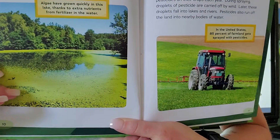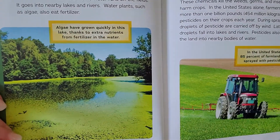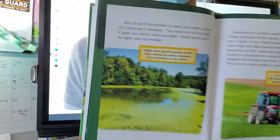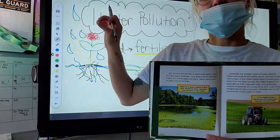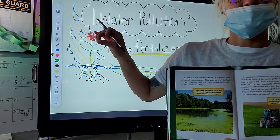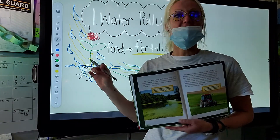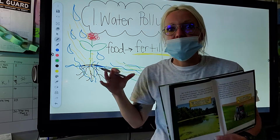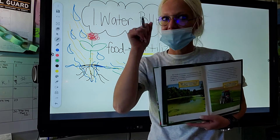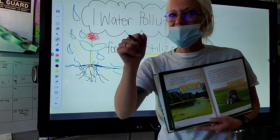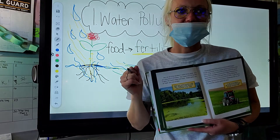Does anybody have a pet fish at home? Think about Finding Nemo — remember when he is in the dentist's office and they shove a rock in the automatic cleaner that cleans the water? What happens to the fish tank when it's not being cleaned? It gets a bunch of disgusting stuff — it gets algae. It turns green. Algae is green.